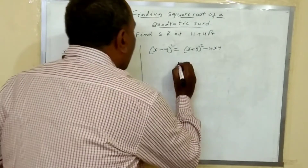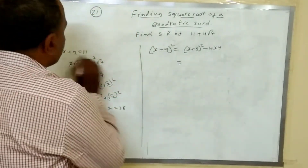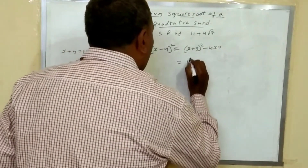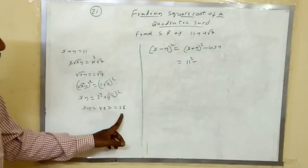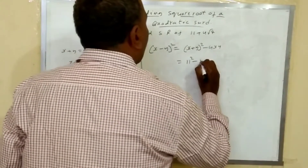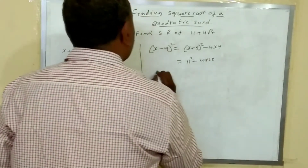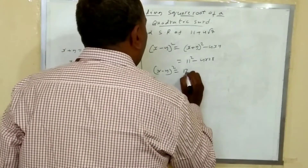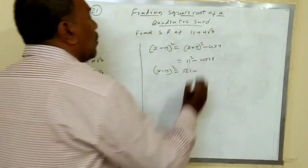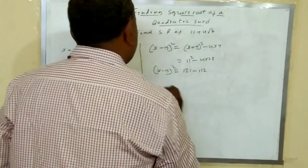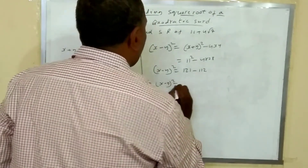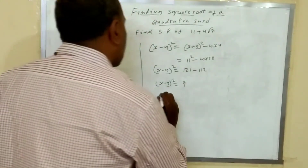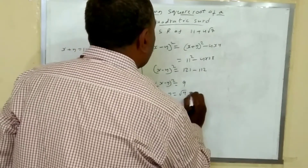So x minus y whole square equals x plus y whole square minus 4xy. Substituting x plus y equals 11 and xy equals 28: 11 squared minus 4 into 28 equals 121 minus 112 equals 9. Therefore x minus y whole square equals 9, so x minus y equals 3.